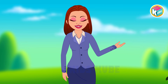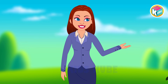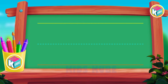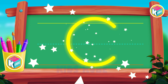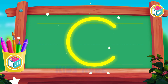Now we will learn the capital letter C. First, draw a circle back and open from the first line to the third line. Wow, this is the capital letter C.